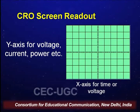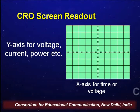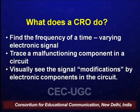In the case of a CRO, the beam of electrons acts as a stylus, just as we use a pencil for a normal graph paper. The CRO is used to find the frequency of a time-varying electronic signal. We understand that all time-varying electronic signals are AC. We can trace a malfunctioning component in a circuit and visually see the modifications made by electronic components within the circuit.